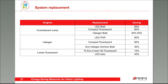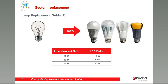Depending on the current technology and the desired one, there are many replacement possibilities. For example, if we have an incandescent lamp, we can replace it with a LED, with a compact fluorescent, or even with a halogen. In the following slides, we're going to see the recommended lamps depending on the original technology. The table shows the power of the current lamp — in this case the incandescent lamp — and the power of the new lamp, so we can calculate the energy savings of this replacement. With replacement from incandescent to LED, we can get 80% savings.